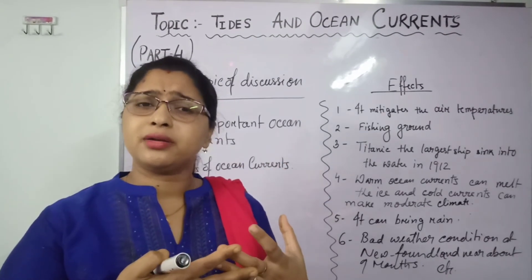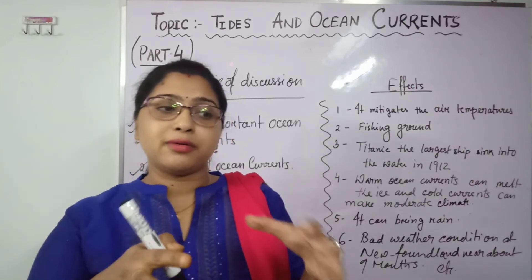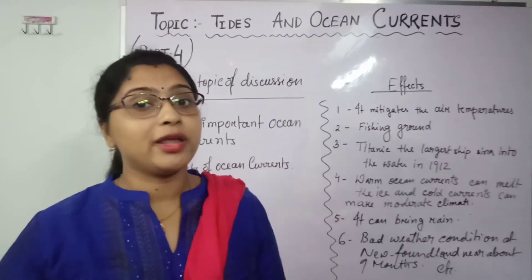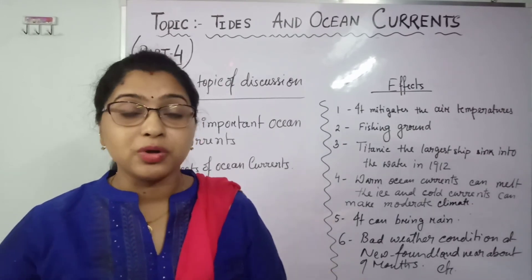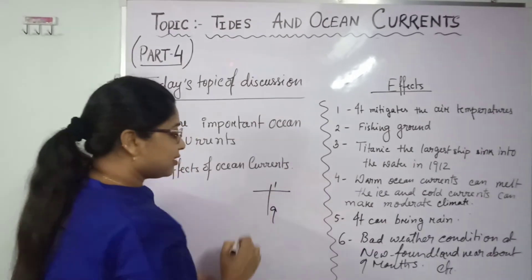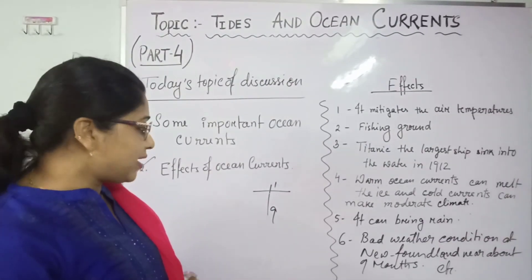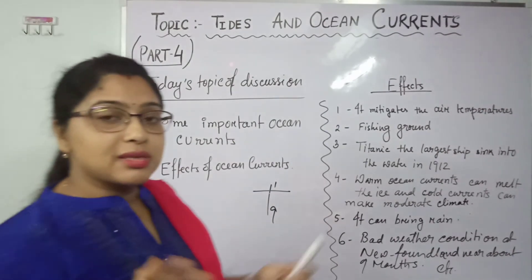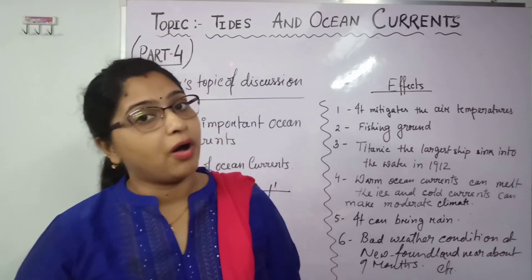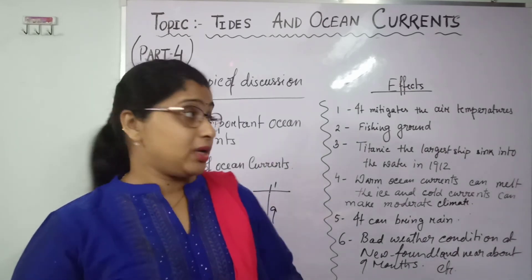Ocean currents also create bad weather conditions. Near Newfoundland, when warm and cold currents converge, dense fog forms which is not suitable for navigation. Cold currents coming from polar areas bring icebergs — only one part of an iceberg is visible above water while nine parts are below, which is why the Titanic struck one and sank. These bad weather conditions near Newfoundland due to the convergence of warm and cold currents can persist for about nine months.